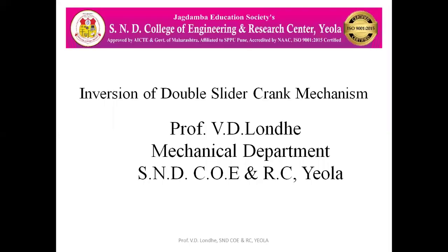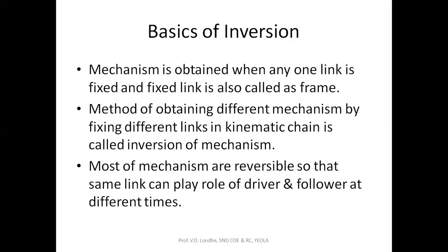Hello everyone. Today we are going to see inversions of the double slider crank chain mechanism. A mechanism is a combination of links in which any one of the links is fixed and the other links have relative motion. The fixed link is also called the frame. By fixing different links for the same mechanism, we get different inversions — that is, different mechanisms — with different inputs and outputs.